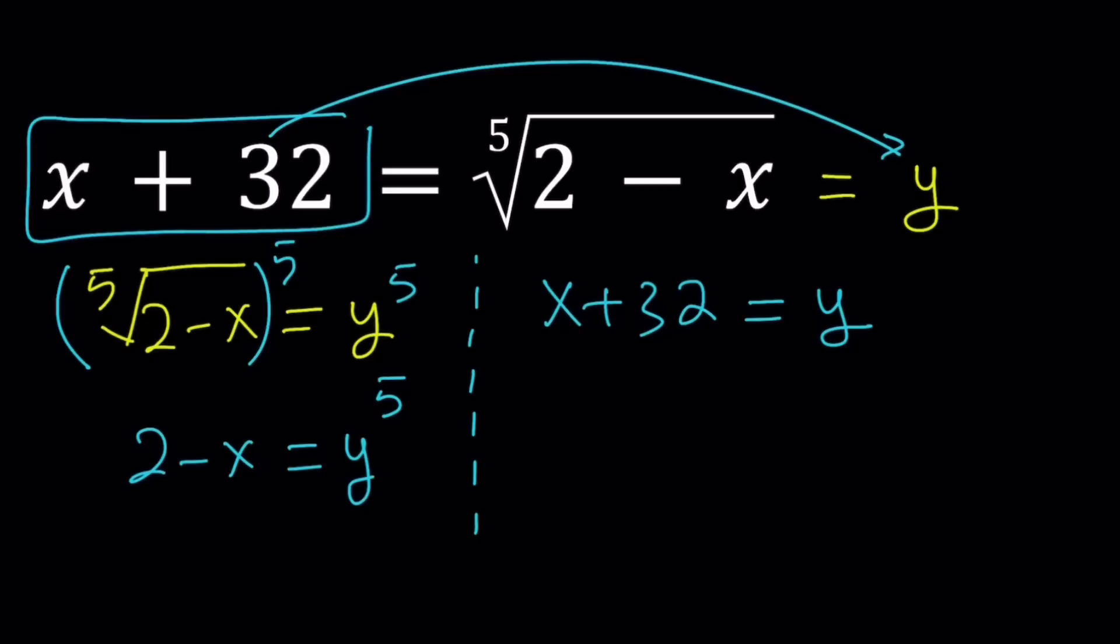Now my original equation is in x, but I want to turn it into an equation in y because that's going to be a lot easier to solve. So we're getting rid of the radicals basically here. I do know that y to the fifth power is equal to 2 minus x and x plus 32 equals y. Should I just raise this to the fifth power? We don't want to do that because that's going to make things more complicated. Here's what I want to do: I want to isolate the x from both of these equations and set them equal to each other.